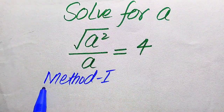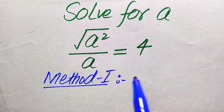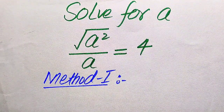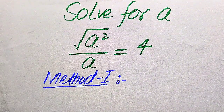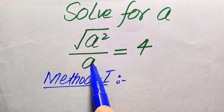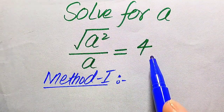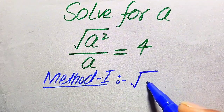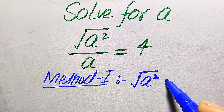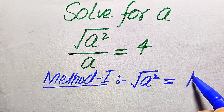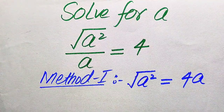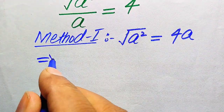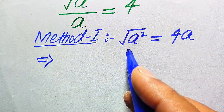If you have any other method in your mind, please don't hesitate to write it in the comment section. Now we move towards our first method. Here we need to move 'a' from the left-hand side to the right-hand side — it is dividing, so when we move it to the right-hand side it becomes: √(a²) = 4a.